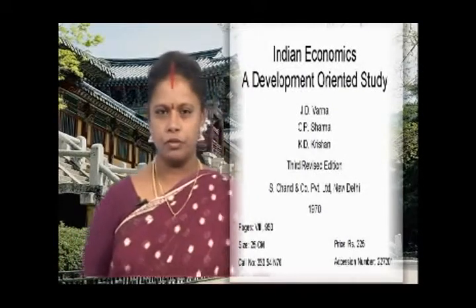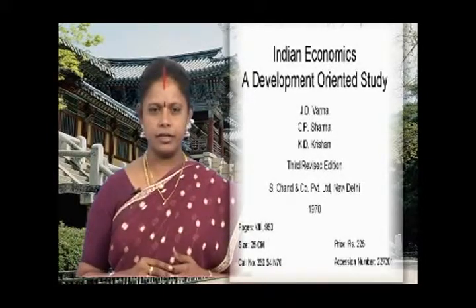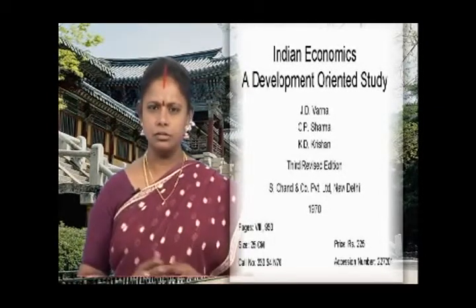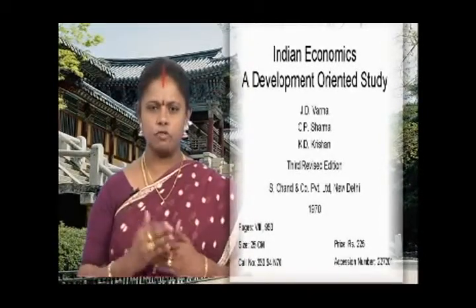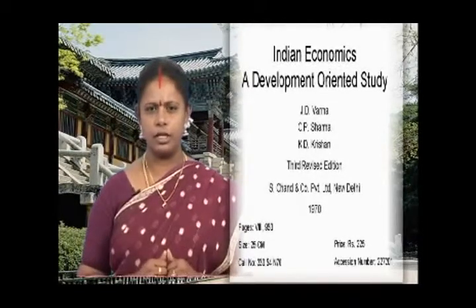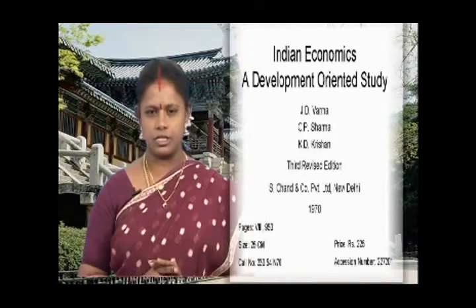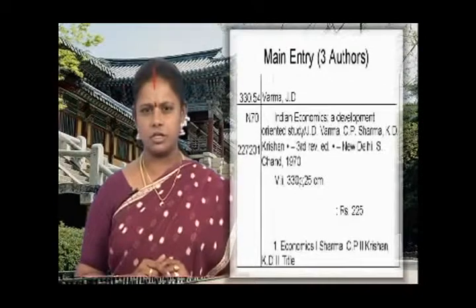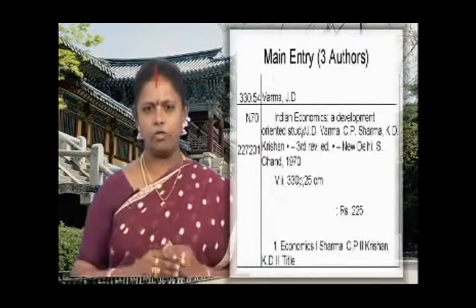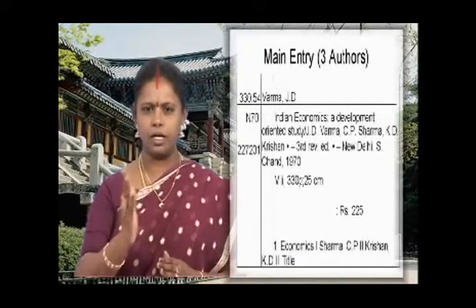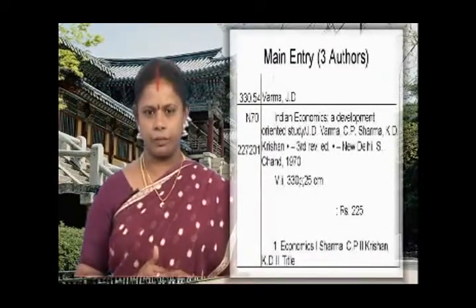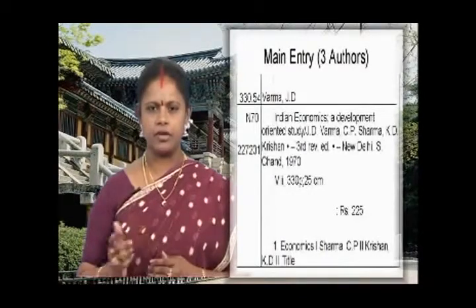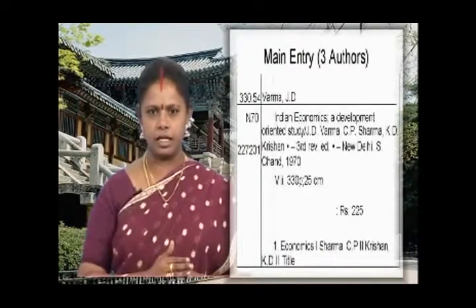Example number 2 is for a three-authorship pattern. The title is 'Indian Economics: A Development Oriented Study' by three authors, with publisher's information and physical description given. Among the three given authors, first find the principal author — either the first one, or the one in thick or capital letters. All three are in the same format here, so the first author, J.D. Varma, is taken as the principal author. Copy down the class number and book number, leave one line for the accession number, then in the heading section write: Varma, J.D.